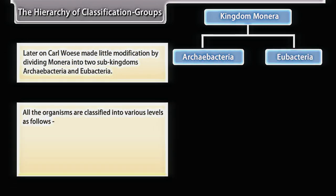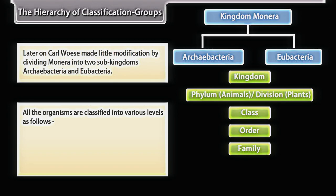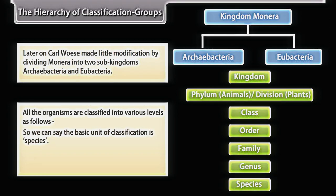All organisms are classified into various levels: Kingdom, Phylum (for animals) or Division (for plants), Class, Order, Family, Genus, and Species. The basic unit of classification is species. We are now going to discuss the important characters of the five kingdoms.